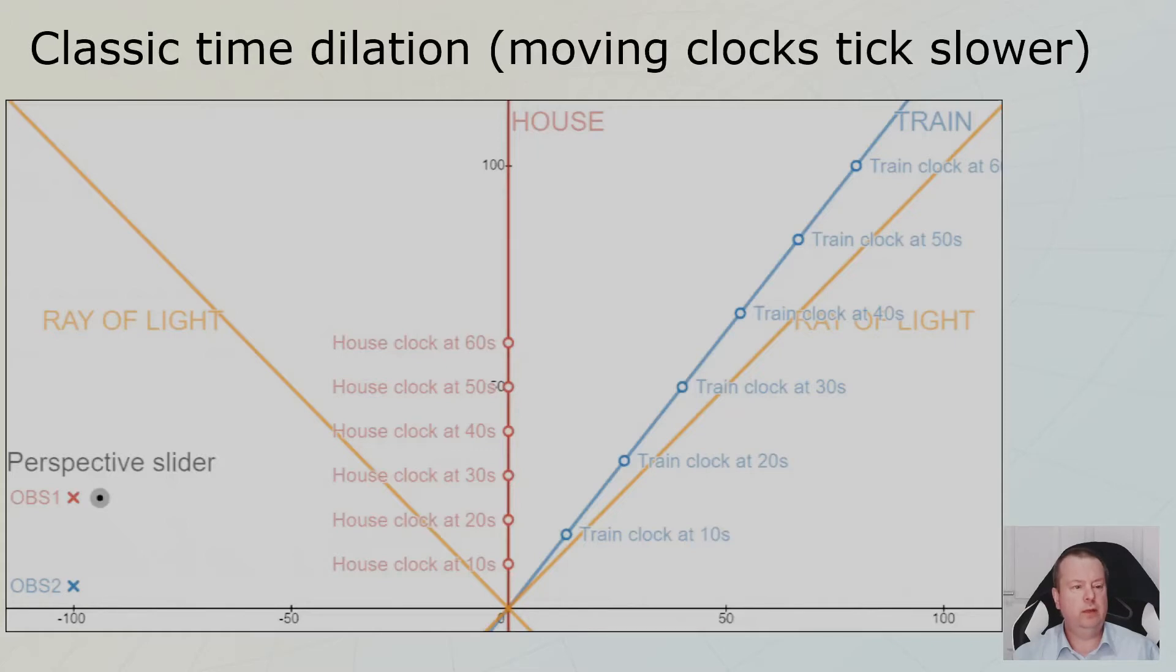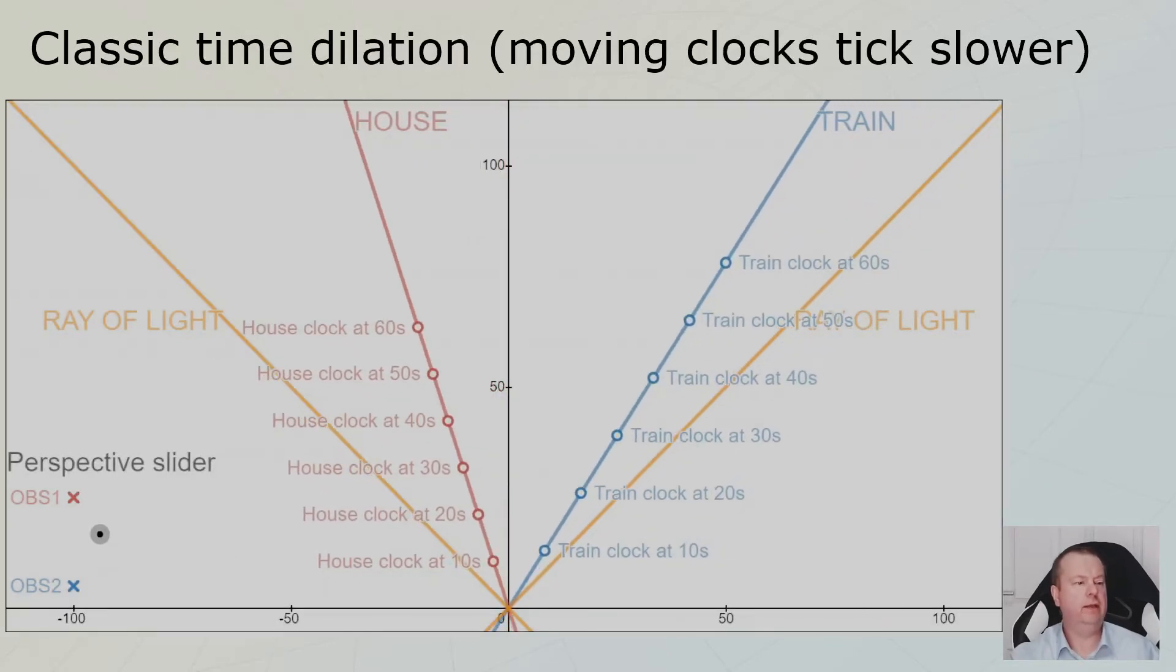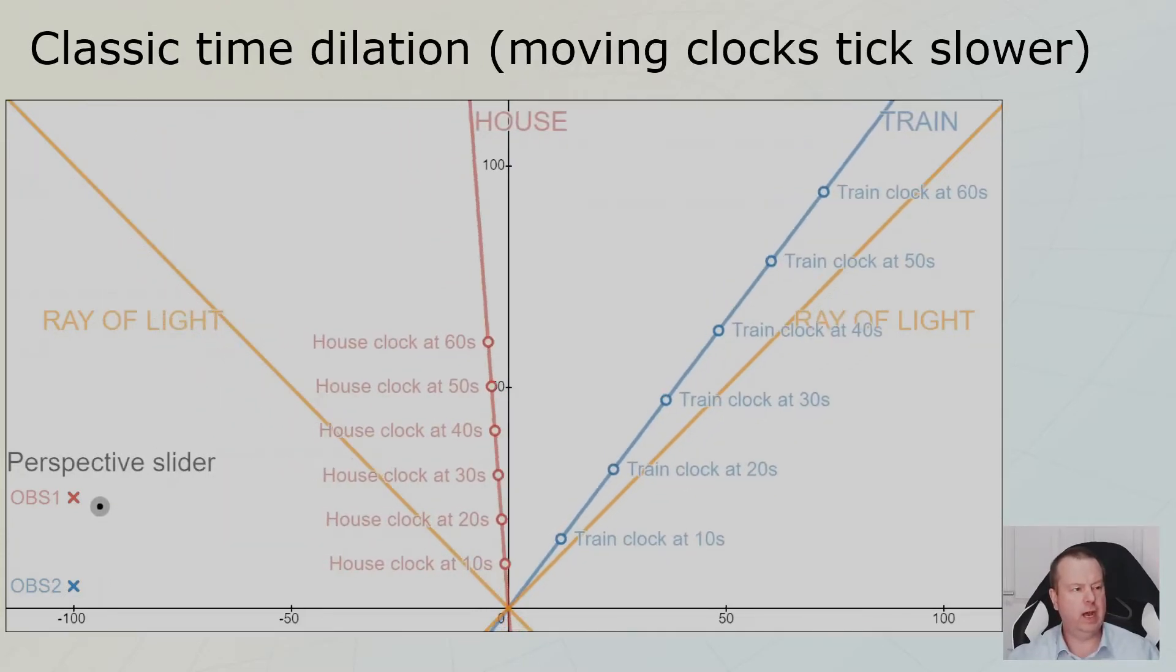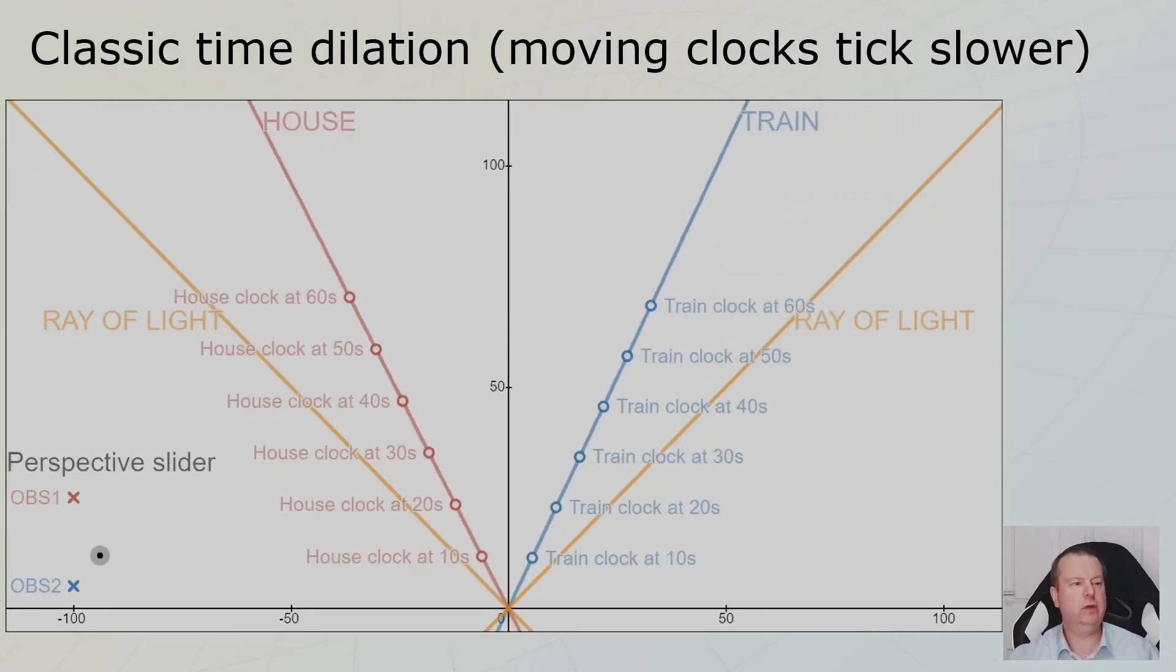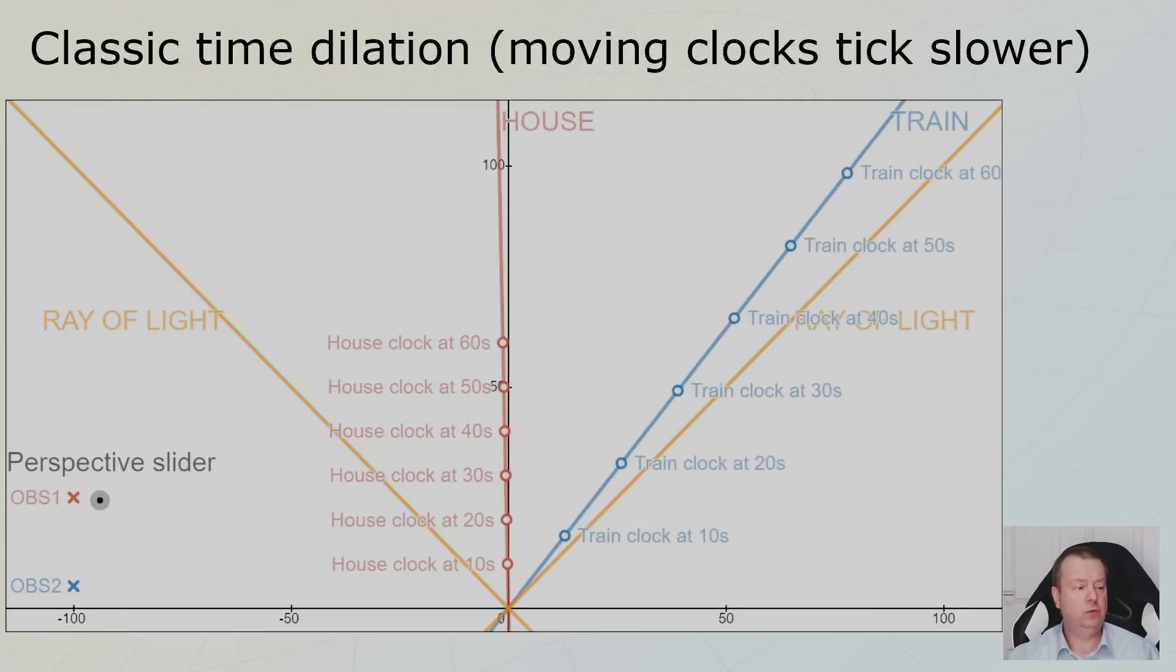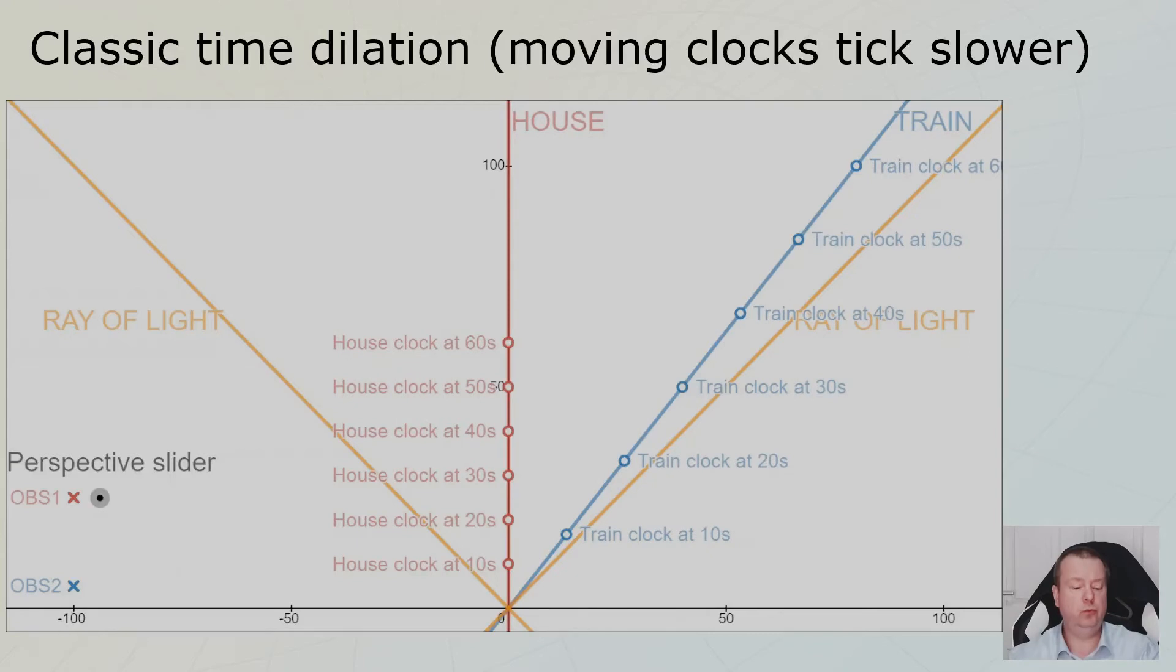Now I punched in the clocks of both observers. The clock of the house and the clock of the train. And you see that the timestamps of the train, it looks like the time axis is dilated. And that's why it's called time dilation. So it's always running behind. And if we switch perspective, you can just watch what happens at these times, from the house perspective, the train's clock is dilated. From the train's perspective, the house's clock is dilated. You can see this by going back and forth between the two perspectives.